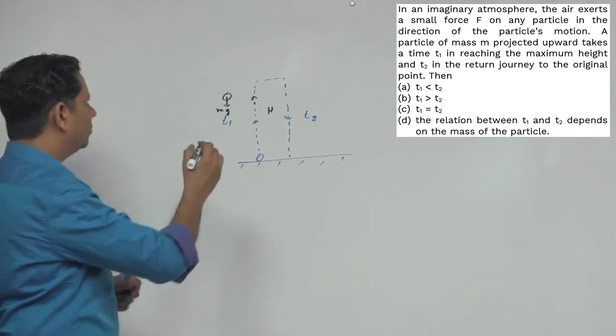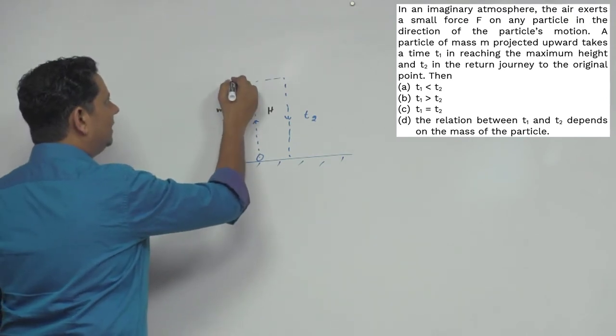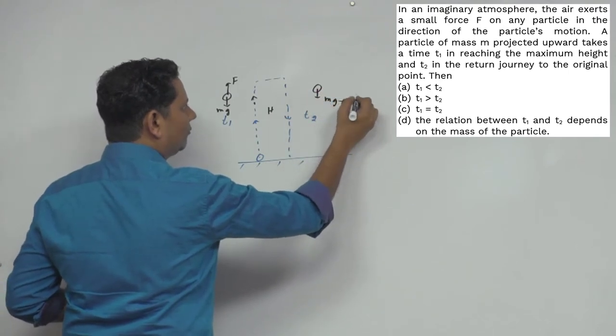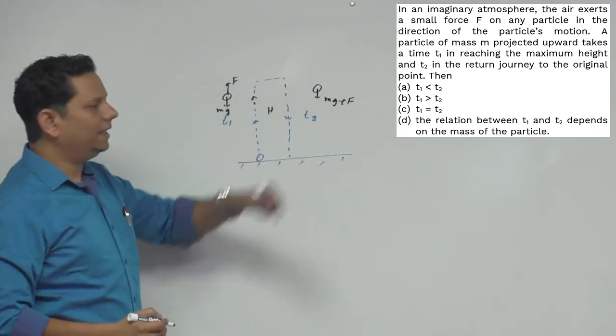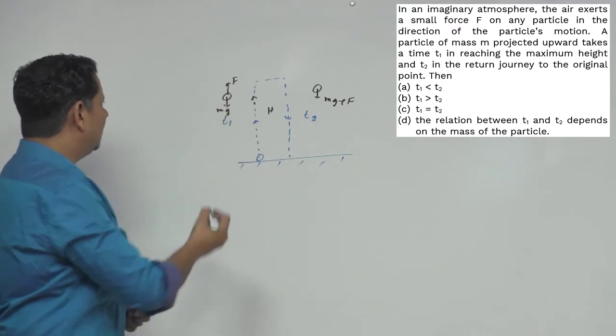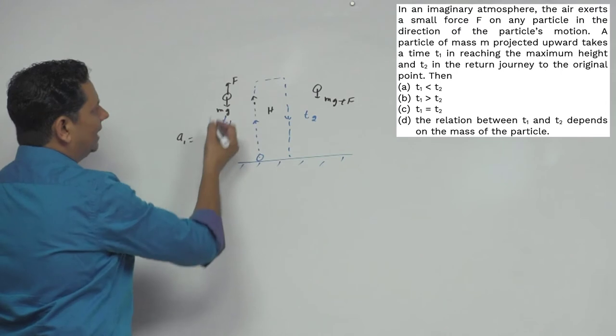So in this case, F force acts here in the upward direction, and when it's coming down, mg acts downward and F acts in this direction. For upward motion, a1 acceleration equals net force divided by